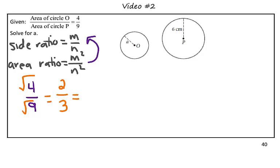So therefore, the side ratio is 2 to 3, or the ratio of the corresponding parts in these two circles would be 2 to 3.